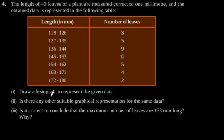First part: draw a histogram to represent the given data. To solve for the first part, we can observe from the table that the length of the leaves is represented in a discontinuous manner. For example, first data is 118 to 126, the second one is from 127 to 135, and the third one is from 136 to 144 mm.